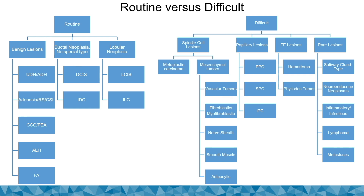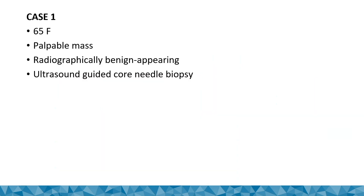On the right are the different buckets we get on consults: spindle cell lesions, papillary lesions, fibroepithelial lesions, and other rare lesions, which include salivary gland type tumors.